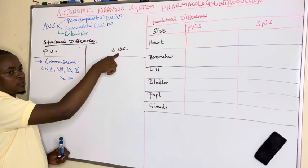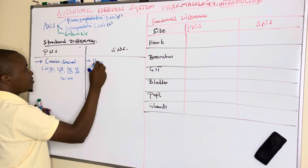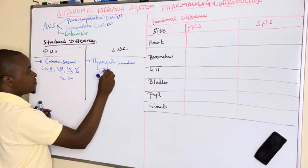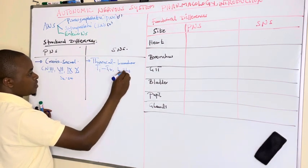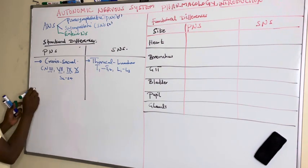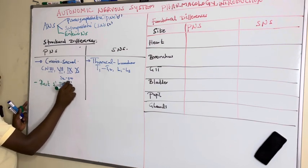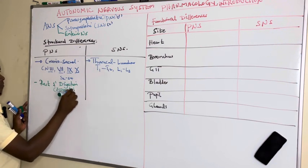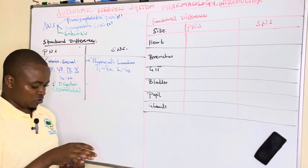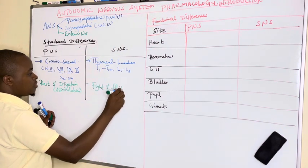In the Sympathetic Nervous System, the nerve outflow or supply is thoracolumbar, supplied by T1 up to T12, then L1 up to L3. The parasympathetic system is associated with rest and digestion — responsible for assimilation — whereas the sympathetic system is for emergency situations, what we call fight or flight.